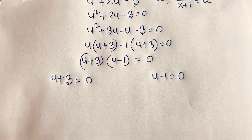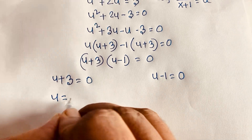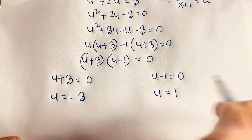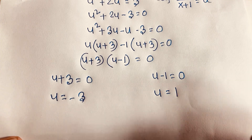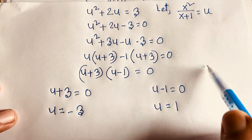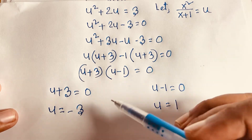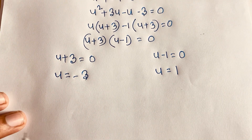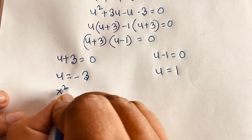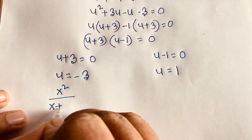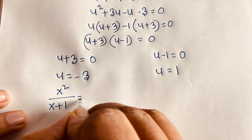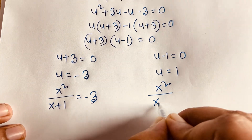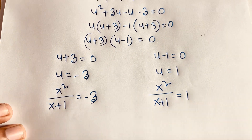From the two cases: u = -3 or u = 1. Recalling that u = x squared over (x+1), we substitute back. Case 1: x squared over (x+1) = -3. Case 2: x squared over (x+1) = 1.